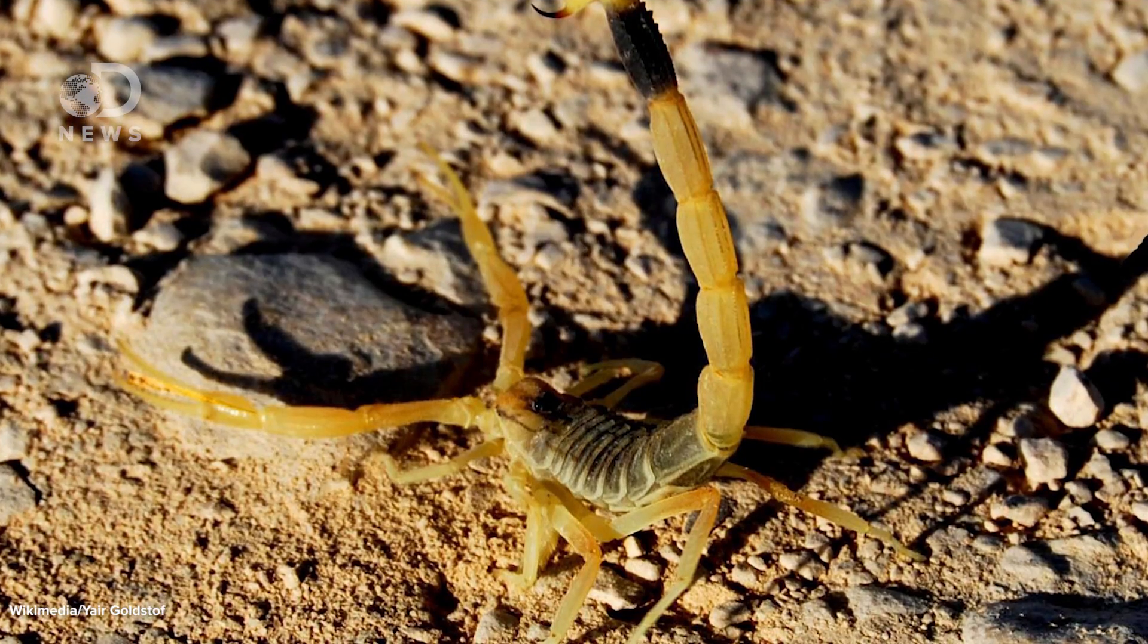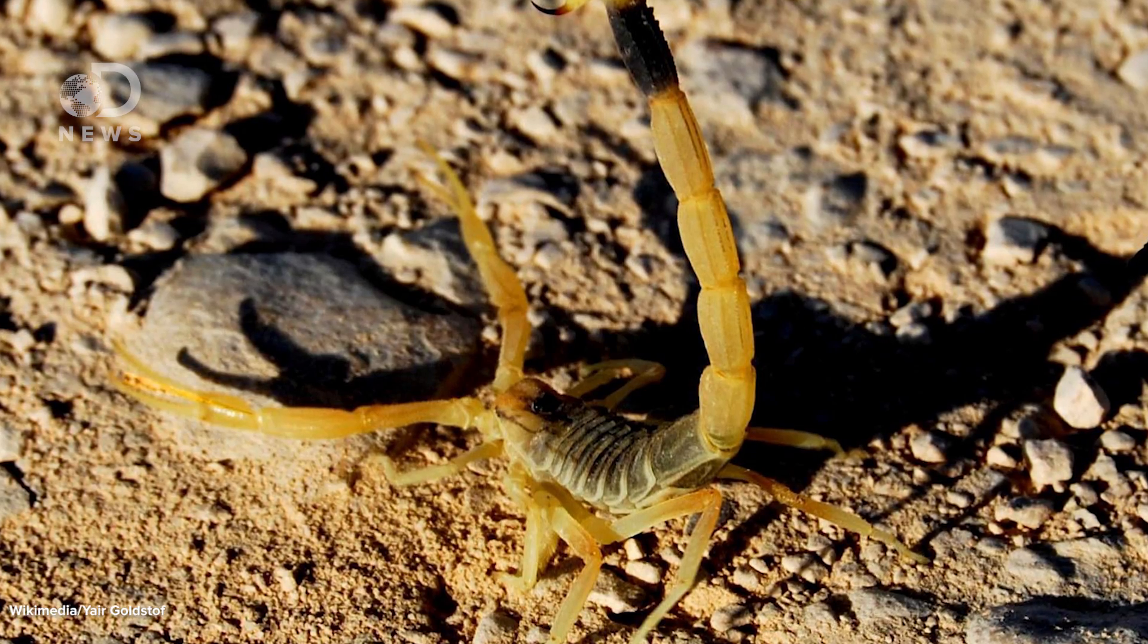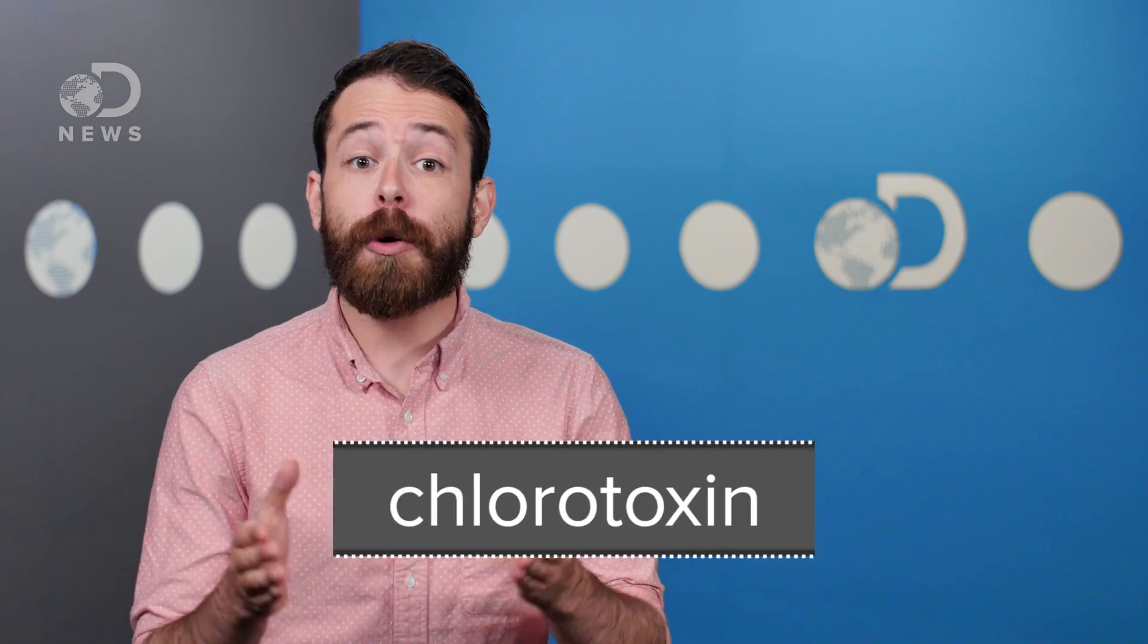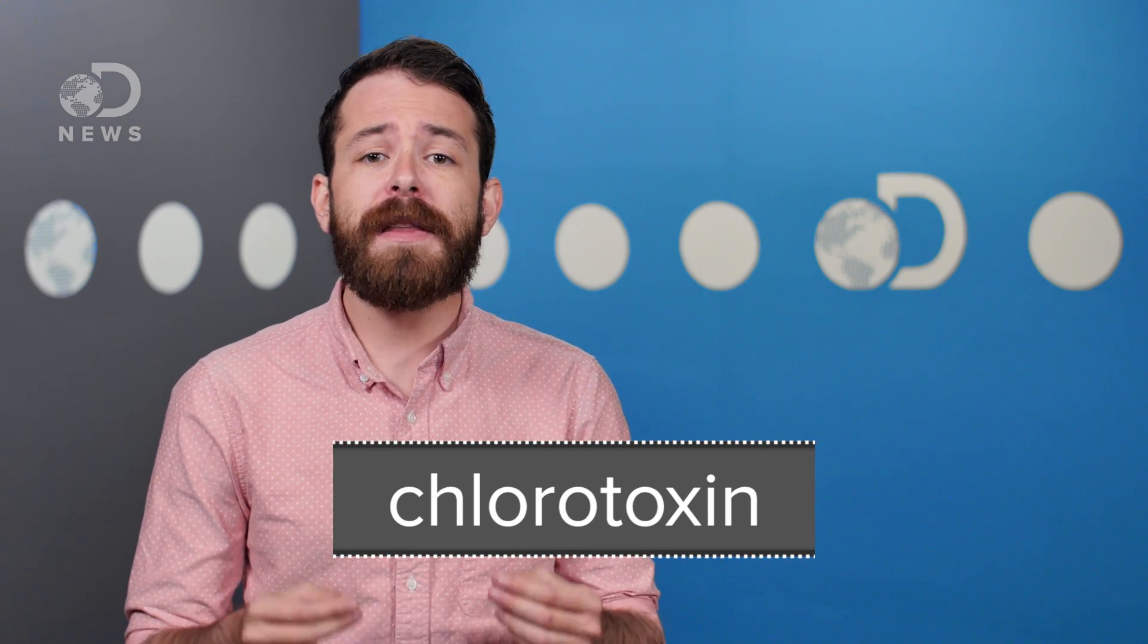Let's take a look at the death stalker scorpion as an example of how venoms work. One of the toxins in this venom is a protein called chlorotoxin. This acts on cells in your body by blocking the molecular channels on the surface of the cell. In muscle cells, this forces them to tense up, leading to paralysis and a whole host of other negative effects that can lead to death.